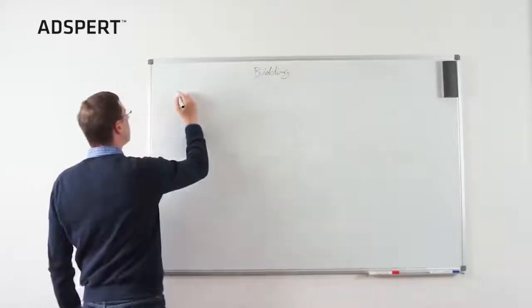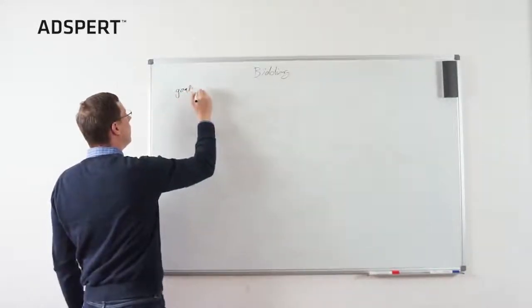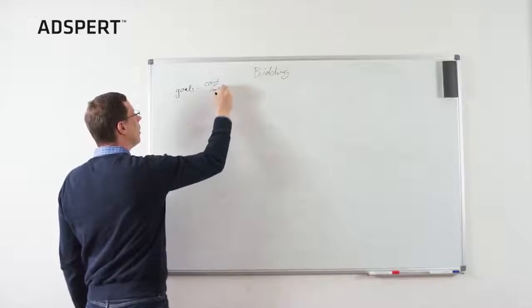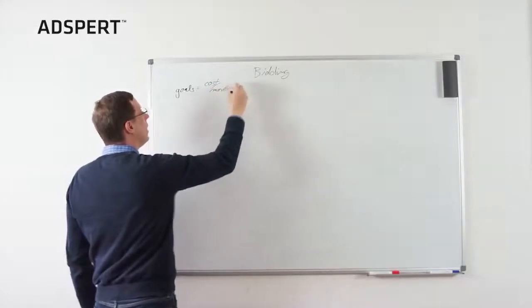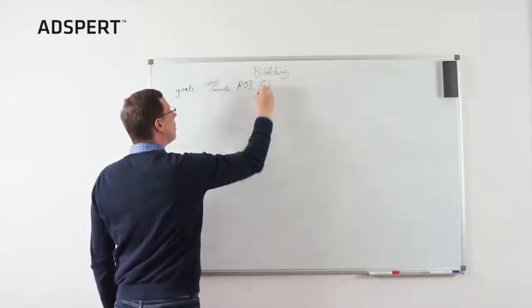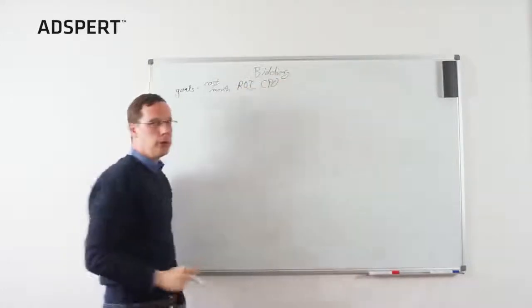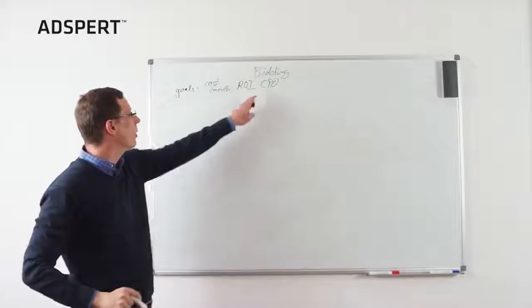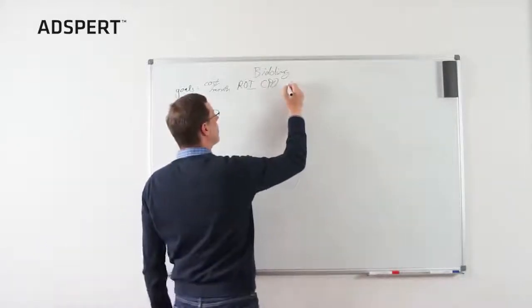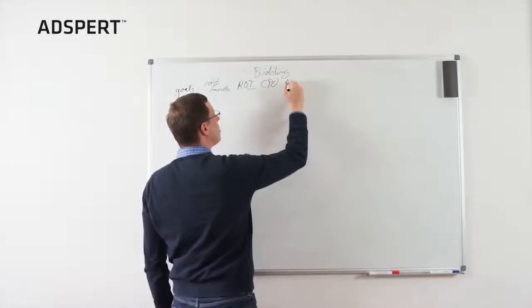The list of usual goals is either cost per month, might be ROI goal or a CPO goal, so cost per order, cost per acquisition. We call it cost per acquisition, also really performance driven as a profit maximization goal.